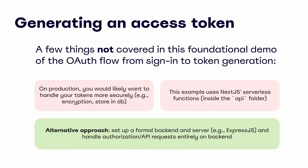While it's helpful to see this flow demonstrated end-to-end, there are a few considerations to highlight. First, in production you would likely want to add additional layers of protection such as encryption and storing your tokens in a database. Second, this example makes use of Next.js serverless functions. Another typical implementation could include setting up a formal backend and server such as Express.js, and handling authorization or API requests entirely on your backend.